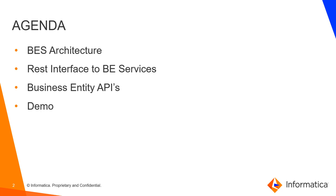We'll look at what interface we are going to cover, followed by the Business Entity API — how to get the API and how to import it in SOAP UI. The demo will contain a UI example where I'll run the E360 UI, create a record, and show from the backend what kind of request we get and how to fire that request in SOAP UI.